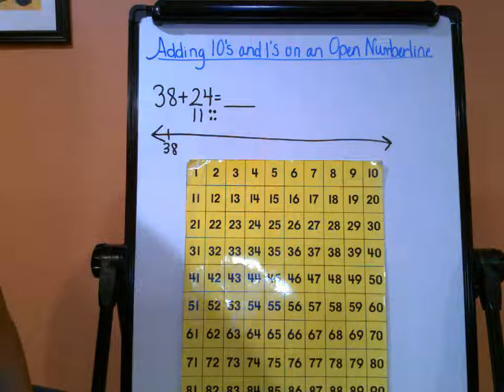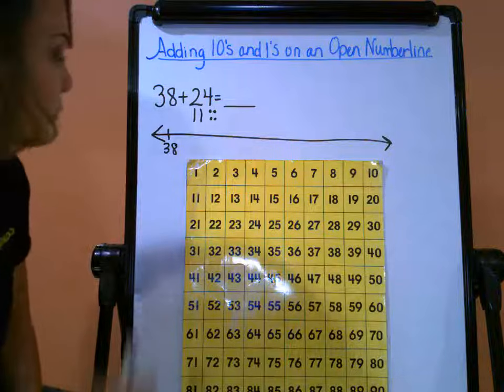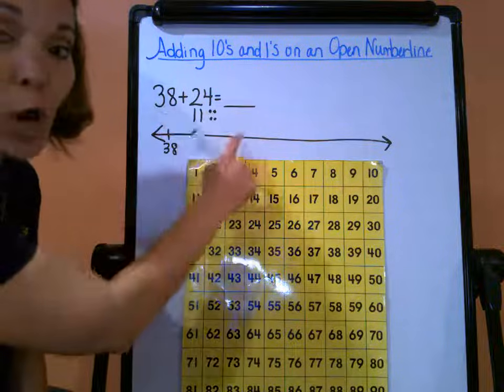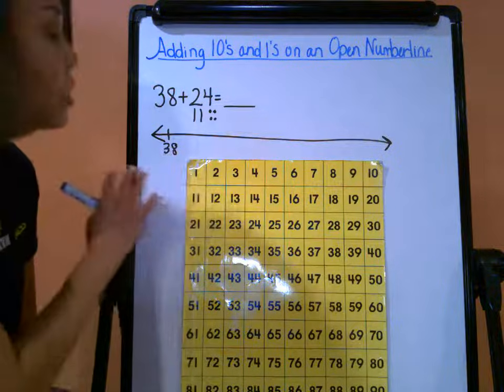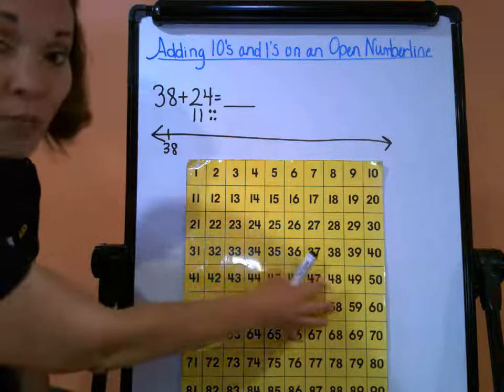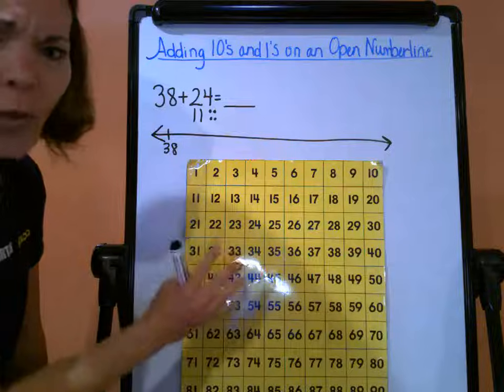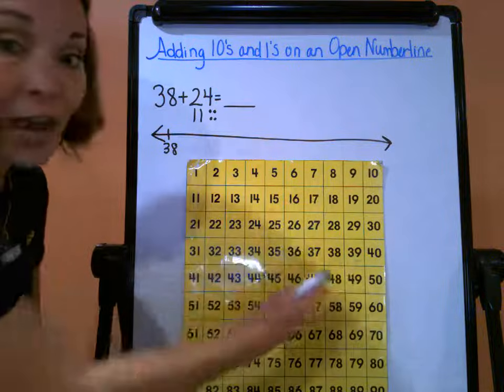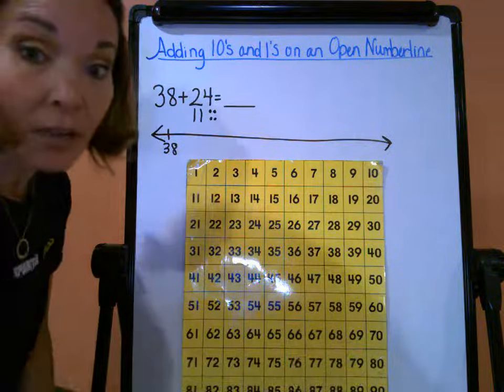So now that I have my two tens and four ones, I want to start showing hops, so that's going to help me get to my sum. I also have my hundreds chart here in order to help me and kind of give me that extra guide to make sure that I'm going to be counting correctly as well.